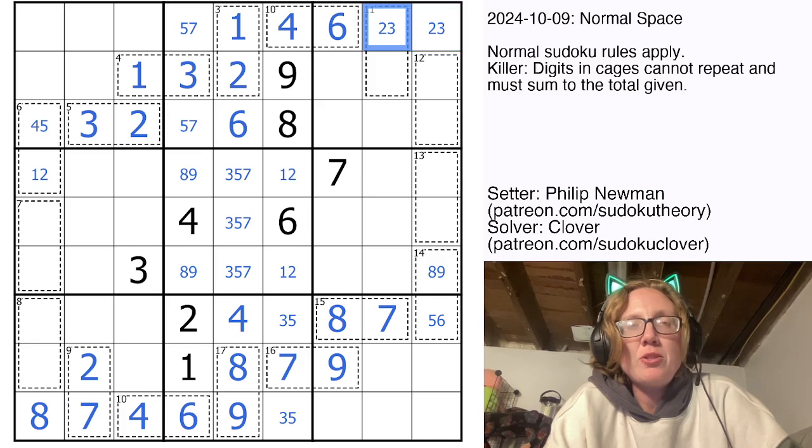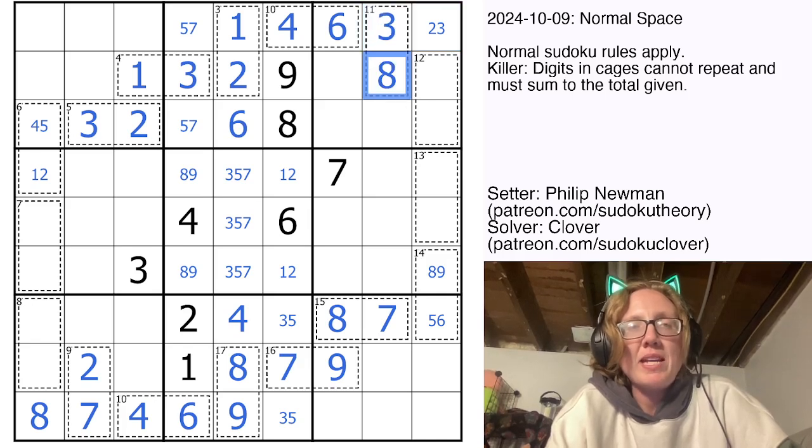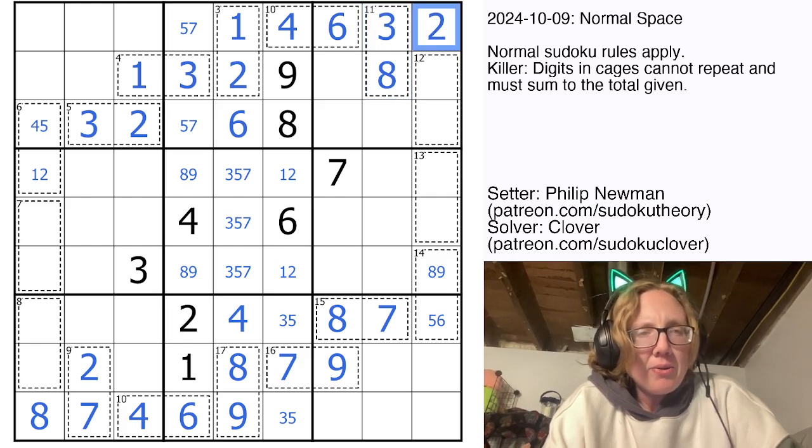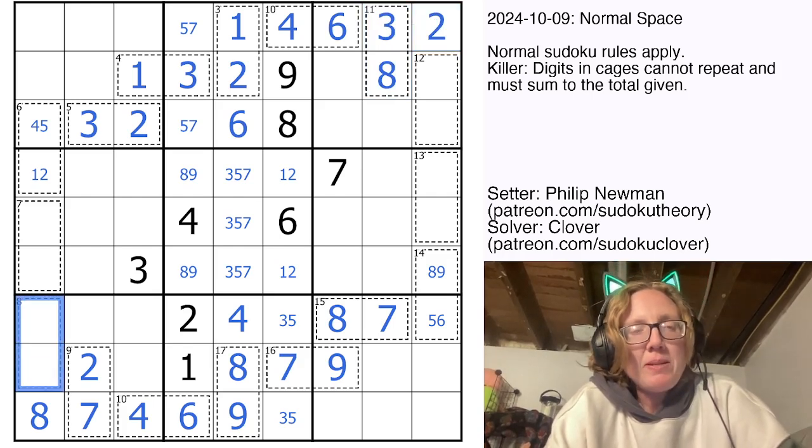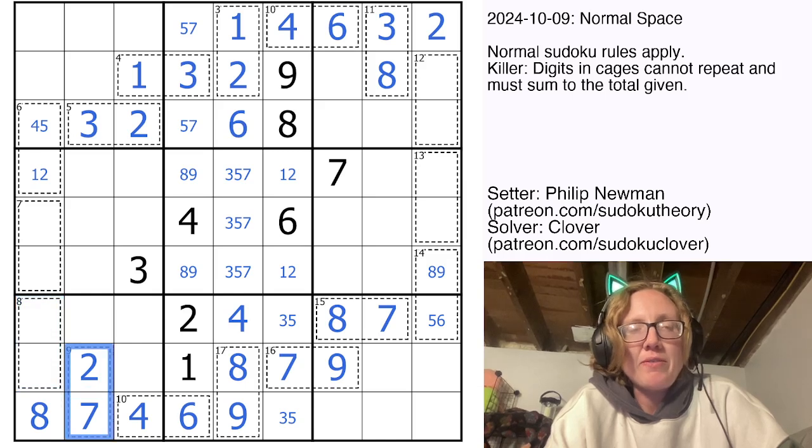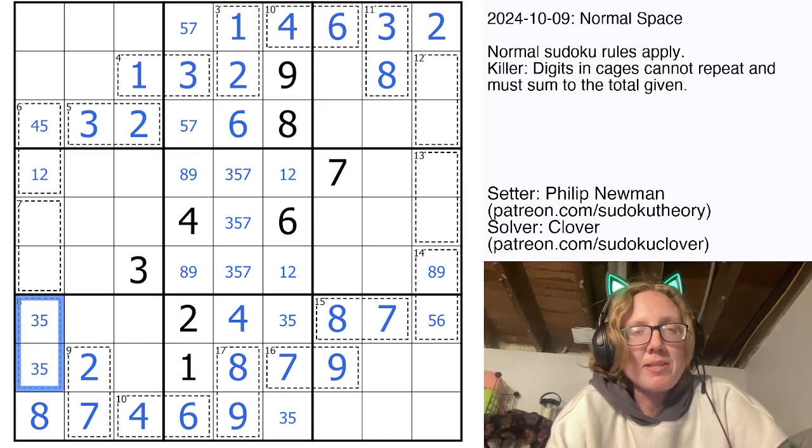Similarly here, this can't be 2 plus 9, so it must be 3 plus 8, making this a 2. Now, can we do this 8 cage? Well, it can't be 2 plus 6, and it can't be 1 plus 7 because we've used 2 and 7 already, so it has to be 3 plus 5.